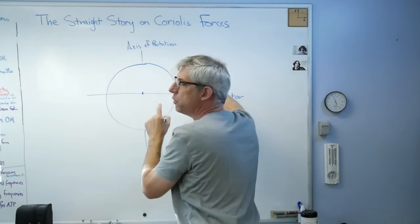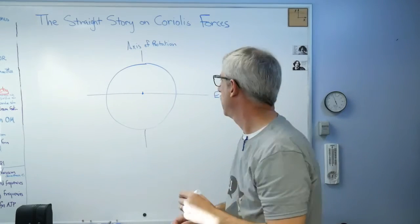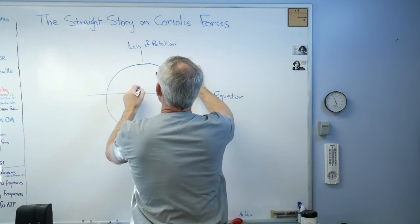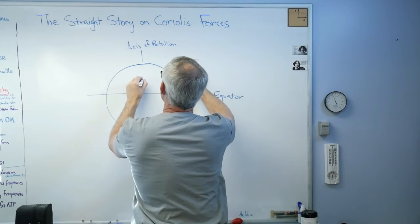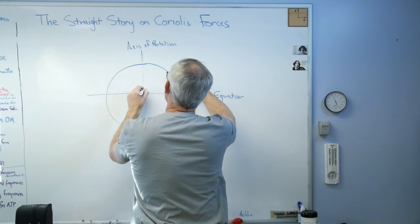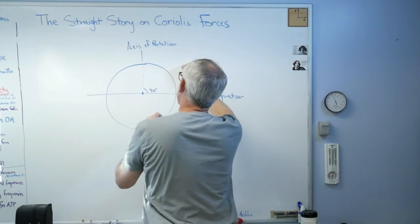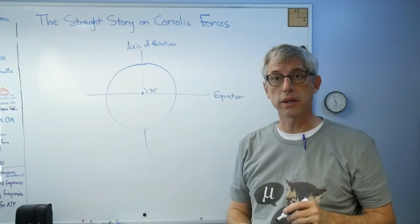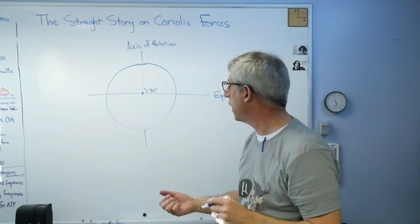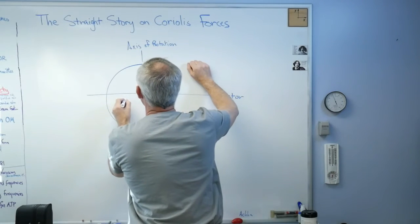My angle where the cannon is aimed is exactly 90 degrees, and so I'm shooting directly north, directly through the axis of rotation of the Earth. Well here's the thing: since the Earth is rotating that way...